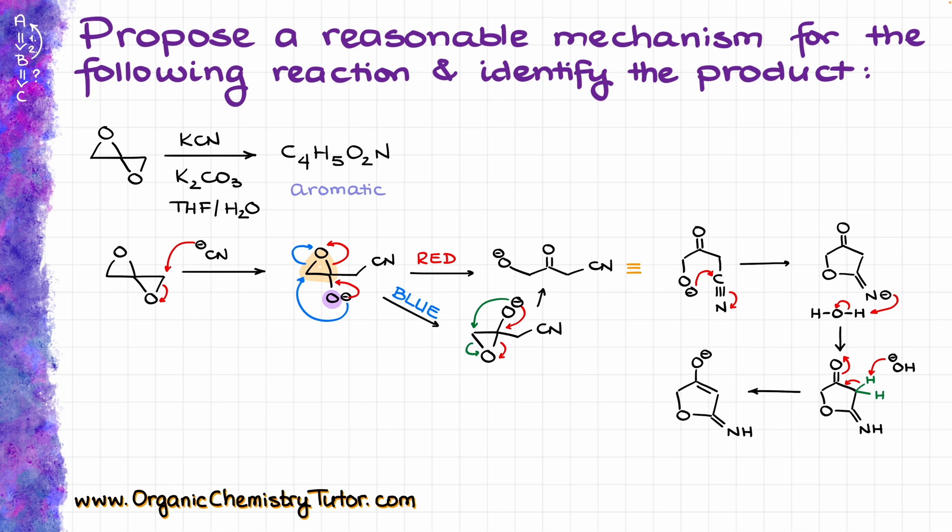Now this enolate is very well stabilized by resonance, so I can show the structure or I can show a different resonance structure where I have my minus all the way on the nitrogen. So if I move my electrons like so, the other resonance structure will look like this.